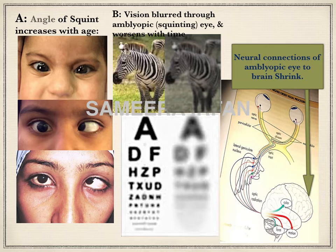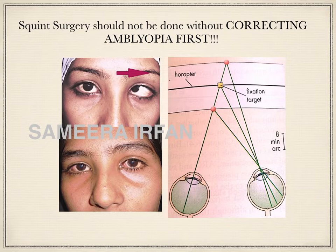If the strabismus is not treated early, the angle increases and the image from that eye is suppressed more and more. The neural connections from that eye to the brain shrink and the amblyopia deepens. If squint surgery is performed on an amblyopic eye without correcting its vision first, the ocular alignment will never be maintained. In the absence of sensory fusion, the operated eye will not stay aligned to the good eye, as it is unable to see the same object, and the sensory locking system involving the Panum's fusion area does not occur — so it will deviate again.